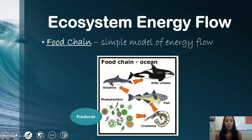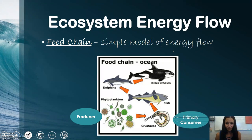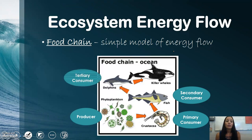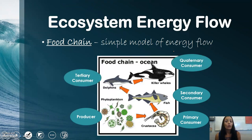We also need to talk about our trophic levels. Phytoplankton is the producer. Crustaceans are primary consumers. Fish are secondary consumers. Dolphins are tertiary consumers. And lastly, our quaternary or apex top predator is the killer whale.